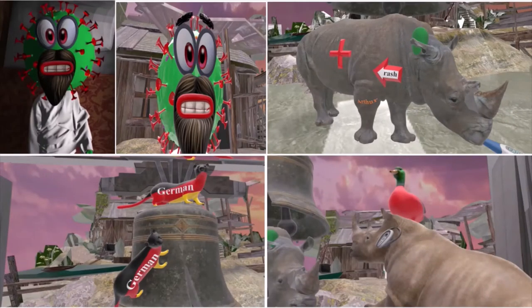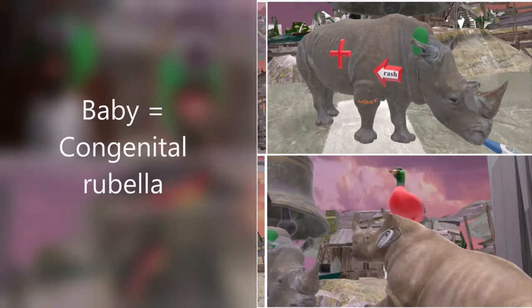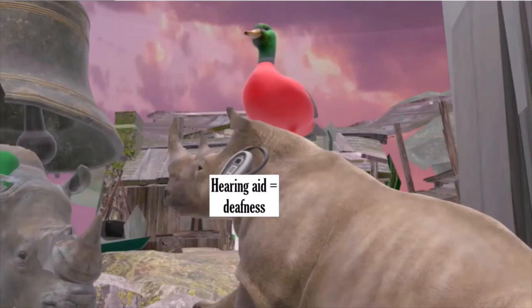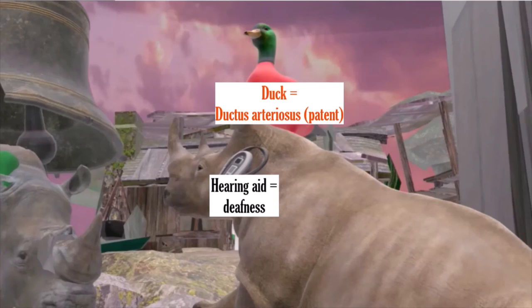We take a look at this picture of the baby rhino — this baby rhino was in fact the one who ruined the bell. This baby rhino reminds us of congenital rubella, a serious disease leading to birth defects. These birth defects include sensorineural deafness, represented by this rhino's hearing aid. The duck that came out of him reminds us of the ductus — the patent ductus arteriosus, or PDA, which presents in congenital rubella.